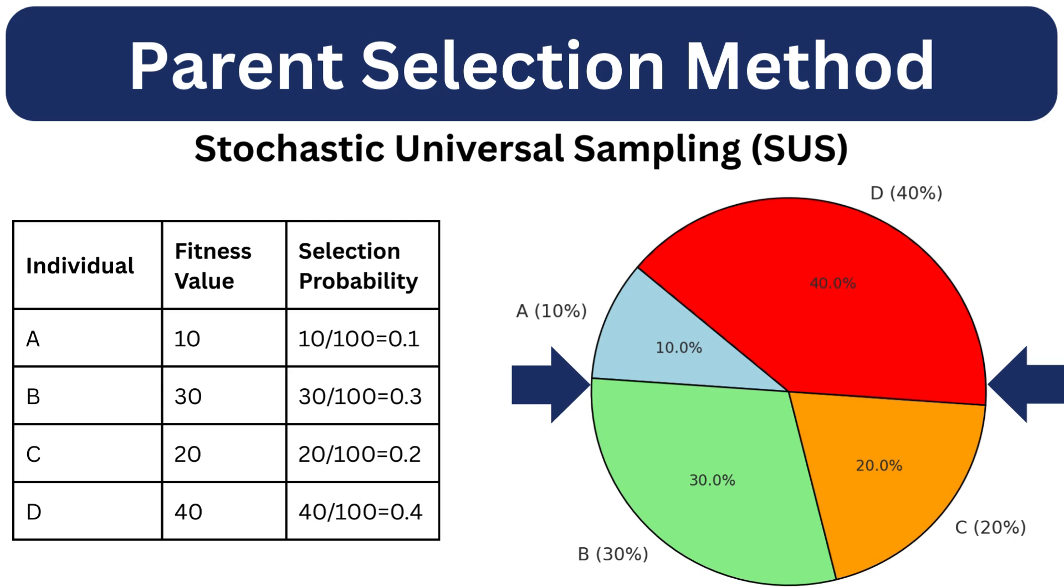Stochastic universal sampling is a more stable version of roulette wheel. Instead of one random spin, we use multiple evenly spaced pointers, ensuring better diversity in parent selection.